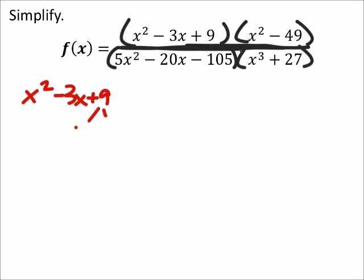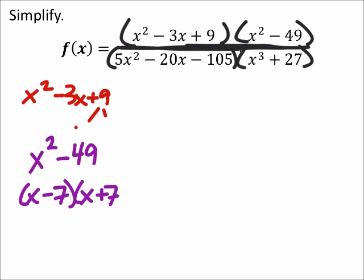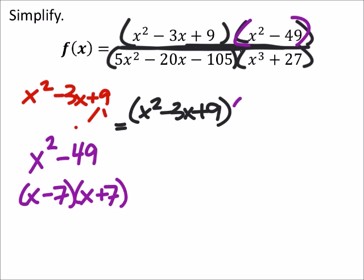Let's look at the next part of the numerator, x² - 49. This is a difference of squares, and we've already done this one. That would just give us (x - 7) and (x + 7). So when I rewrite this expression in the numerator, I still have that x² - 3x + 9, but I've split up that x² - 49 into (x - 7) and (x + 7).